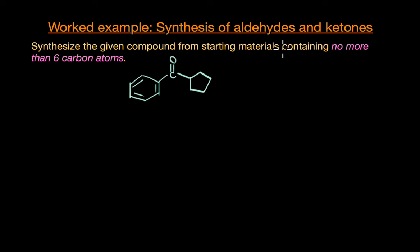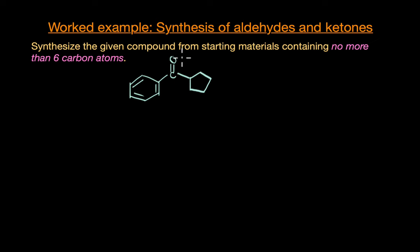What we have here is a ketone. This ketone has two rings — one is the benzene ring and the other is the cyclopentyl group. We cannot break these rings, so the only way to figure out the starting reactants is to break either this bond or this bond.